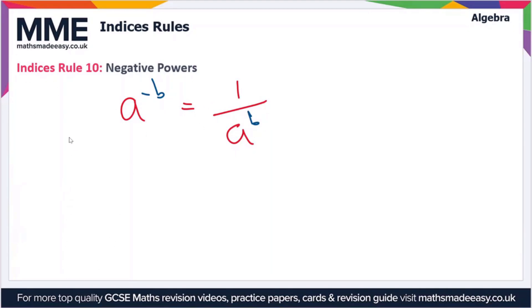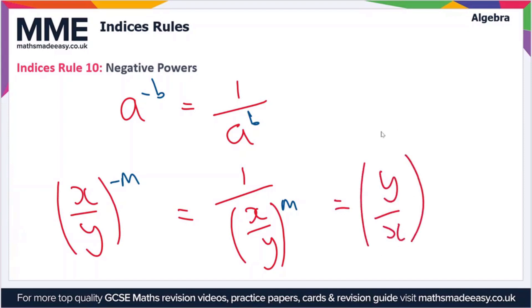It works for everything. Even if we have a fraction, for instance x over y, and we have this to the power minus m, this is going to be equal to 1 over x over y to the positive m. What this actually does is it flips the fraction, so we end up with y over x all to the power positive m.